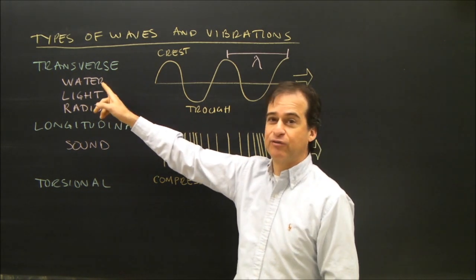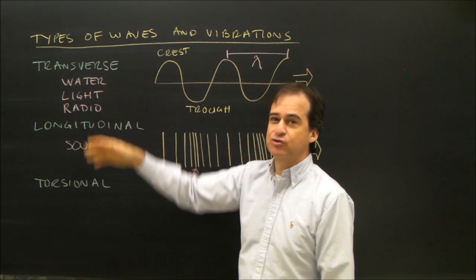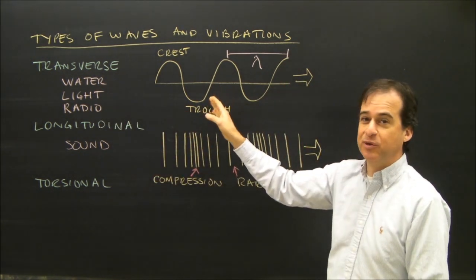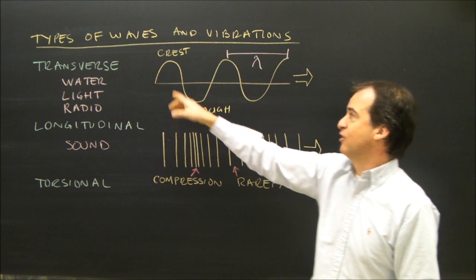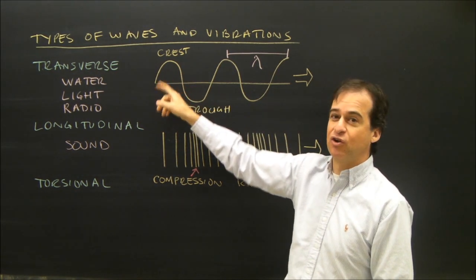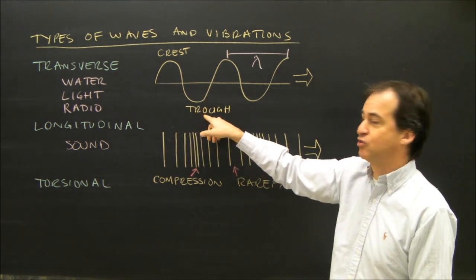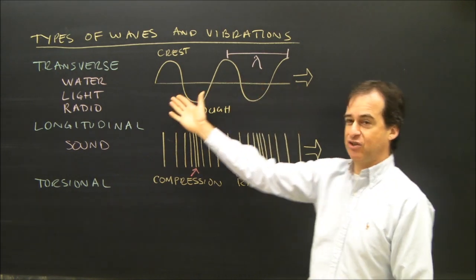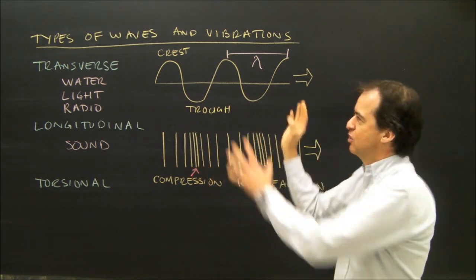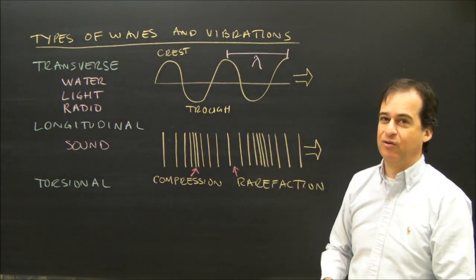So of the three types, let's talk first about transverse. Transverse waves are the ones you're probably most familiar with. They look like this. I've got something in the up top part of the wave is called a crest, and the bottom loop is called a trough. If you want more information on these waves, I've got a whole video where I just talk basically about the parts of this wave and how it works.